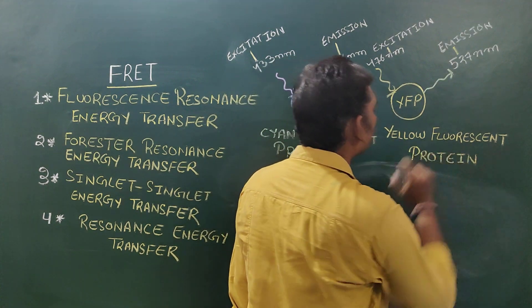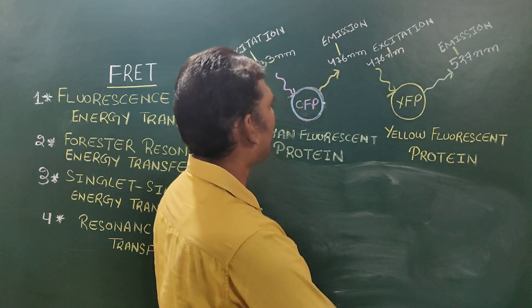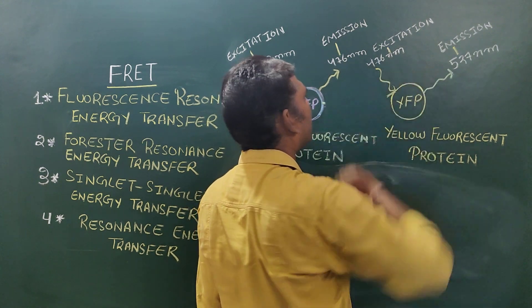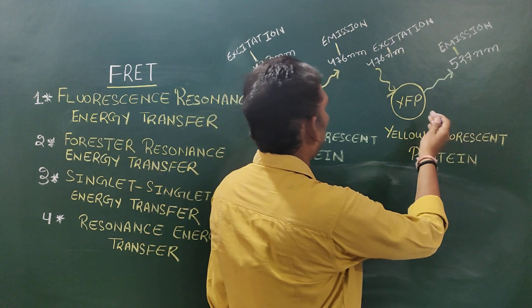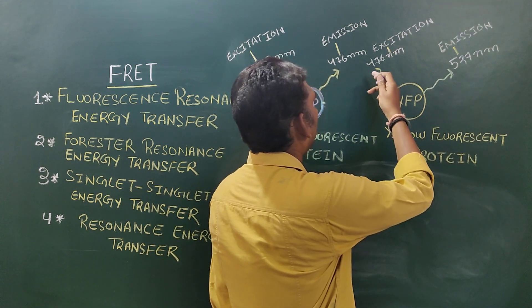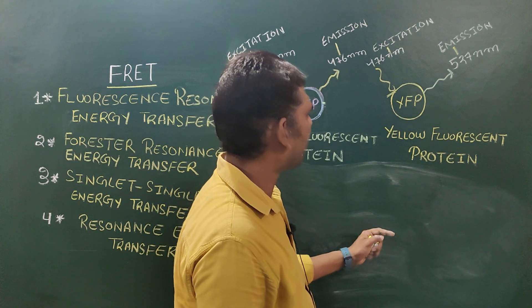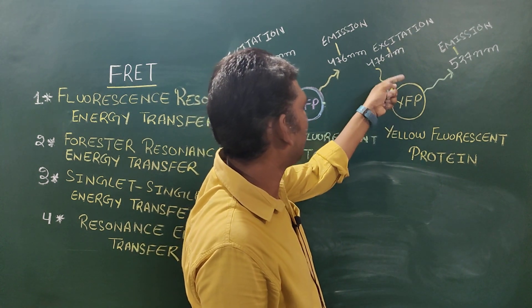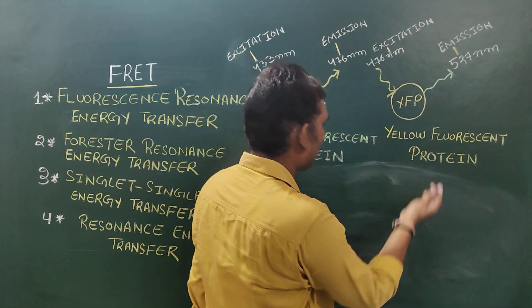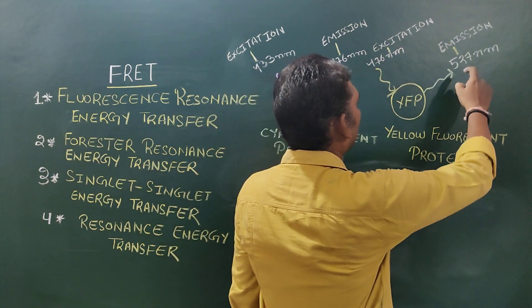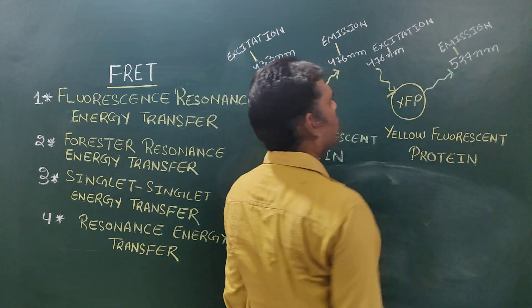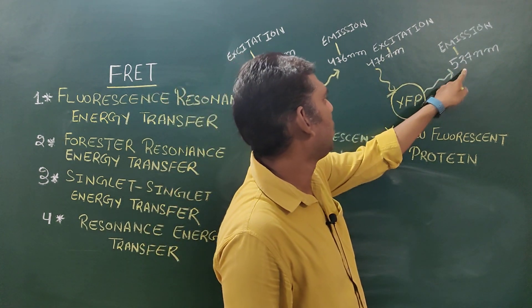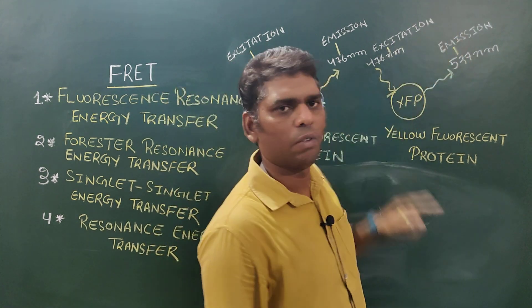The second fluorescent protein is Yellow Fluorescent Protein (YFP). YFP has an excitation wavelength of 476 nanometers. After absorbing 476 nm radiation it reaches an excited state, and when coming back to the ground state it emits radiation of 527 nanometers. So 476 nm is the excitation wavelength and 527 nm is the emission wavelength of YFP.